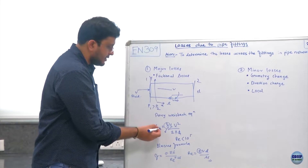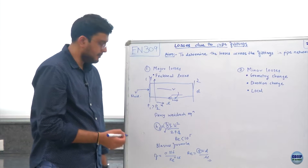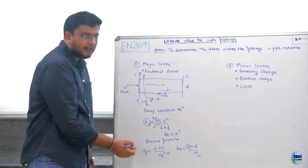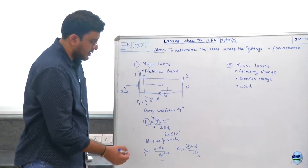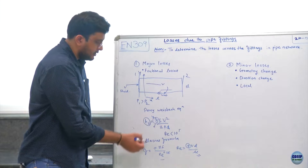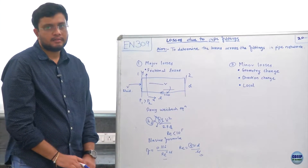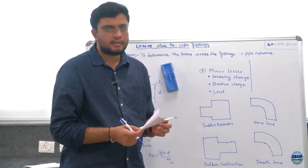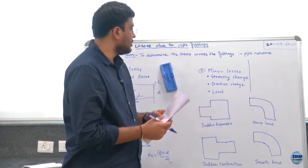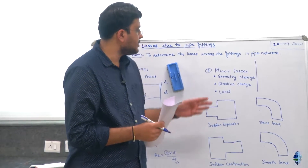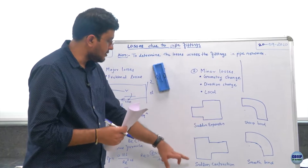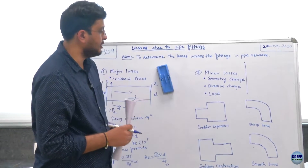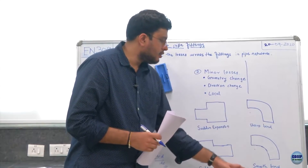In this experiment we will measure head loss across the straight pipe and by measuring head loss we will calculate the friction factor. We will also calculate the friction factor using the Blasius formula and compare the two values. The next type of losses are minor losses, which are local in nature because they occur across the fitting only. The main reasons are geometrical changes — sudden expansion, sudden contraction, and sudden directional change such as a sharp bend or smooth bend.